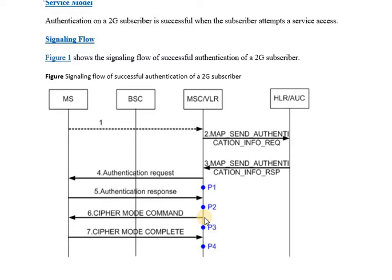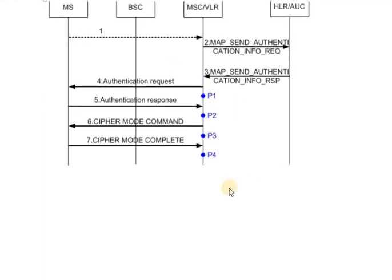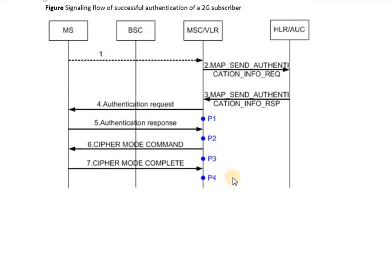Upon successful authentication, the MSC initiates the security process in which a cipher mode command is sent to the mobile station, and the mobile station responds back with the cipher mode complete command. Once this end-to-end authentication and security process is completed, only then will the subsequent call flow continue; otherwise the call flow will be terminated.